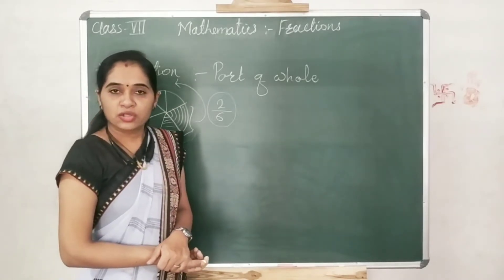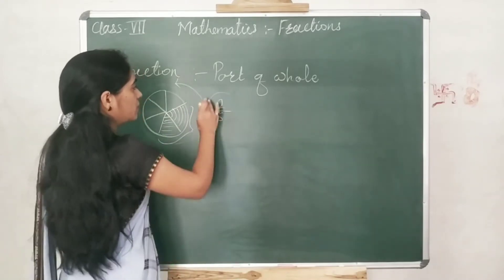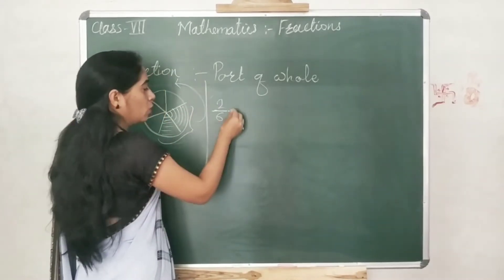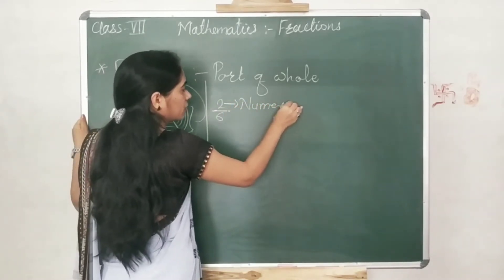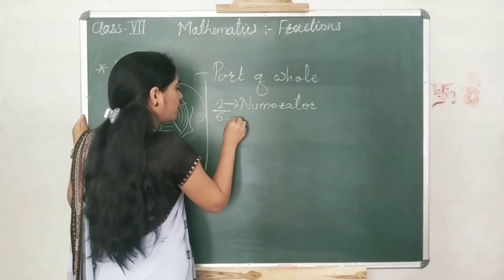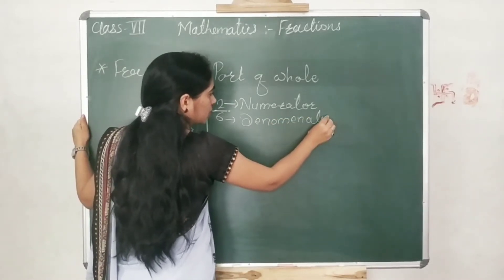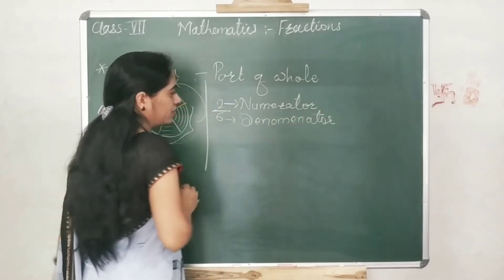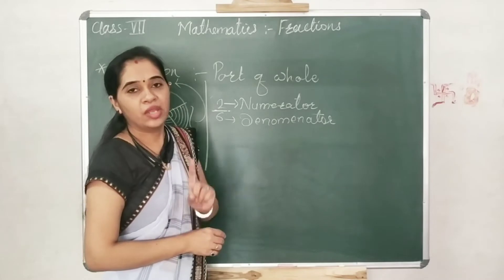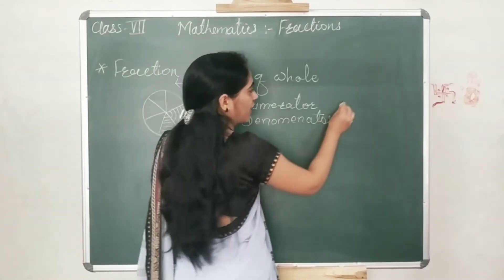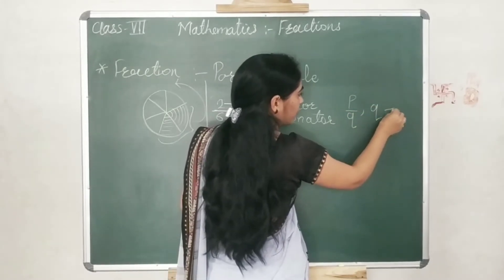When we are writing a fraction, we write the numbers in this format. In this format there is a line — the upper part is called the numerator, and the lower part is called the denominator. One important thing: this denominator is never equal to zero. If you write the fraction in the form of p upon q, then q is never equal to zero.